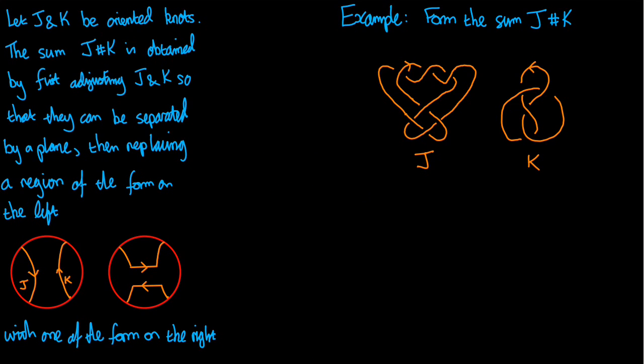So here's the definition. Let J and K be oriented knots and they absolutely have to be oriented. What I'm going to do is tell you how to form the sum written J hash K. How can I add these two knots together?